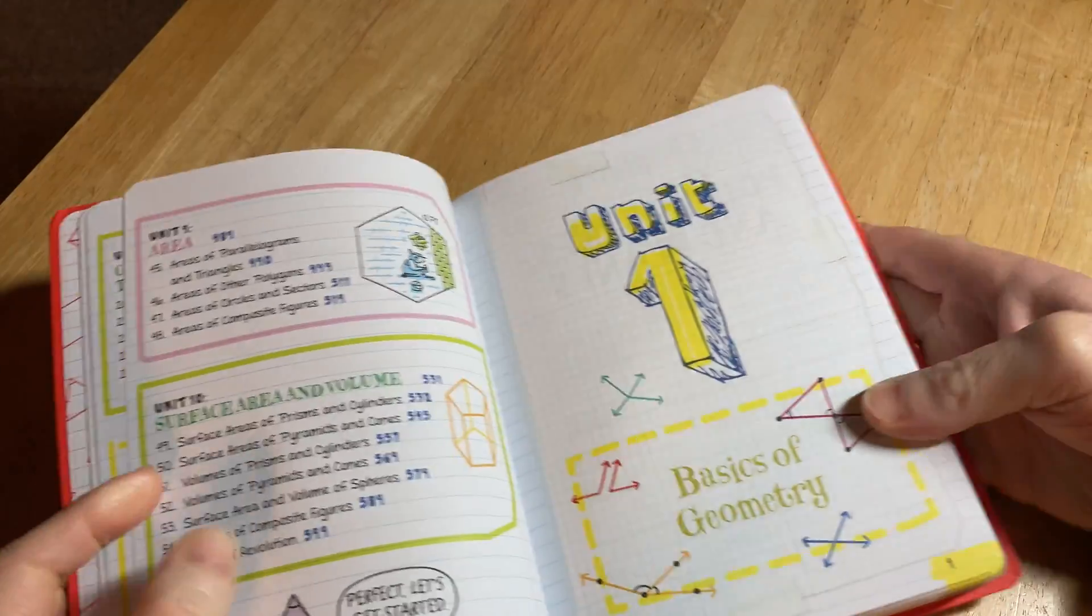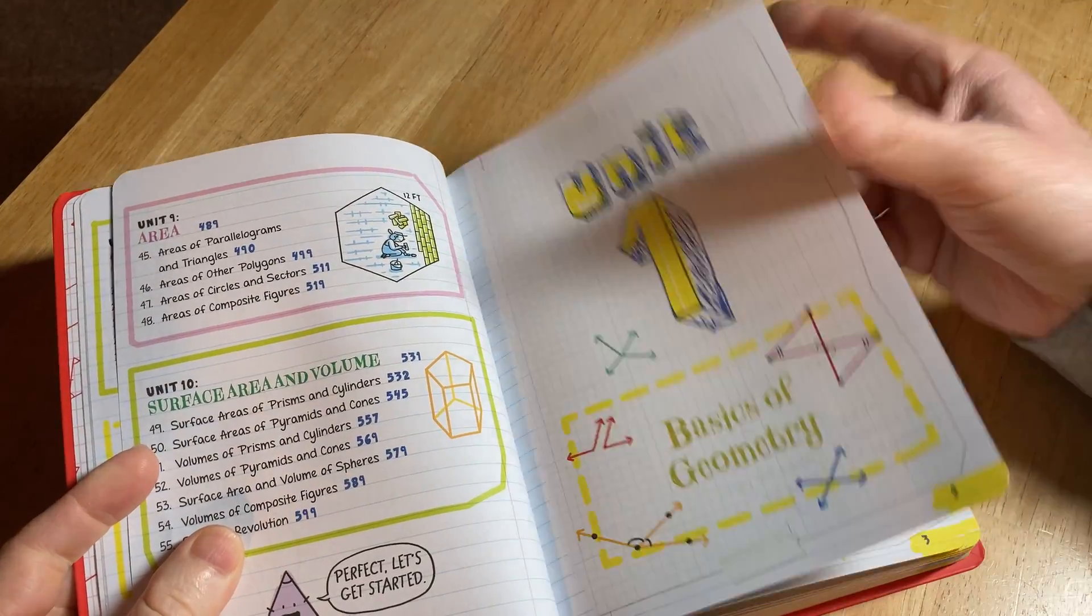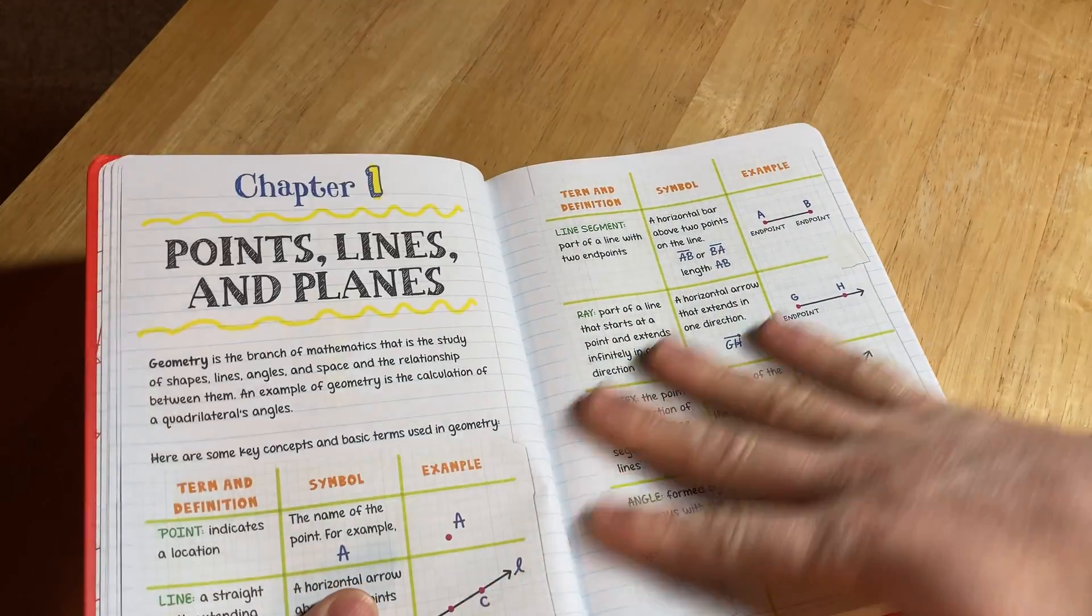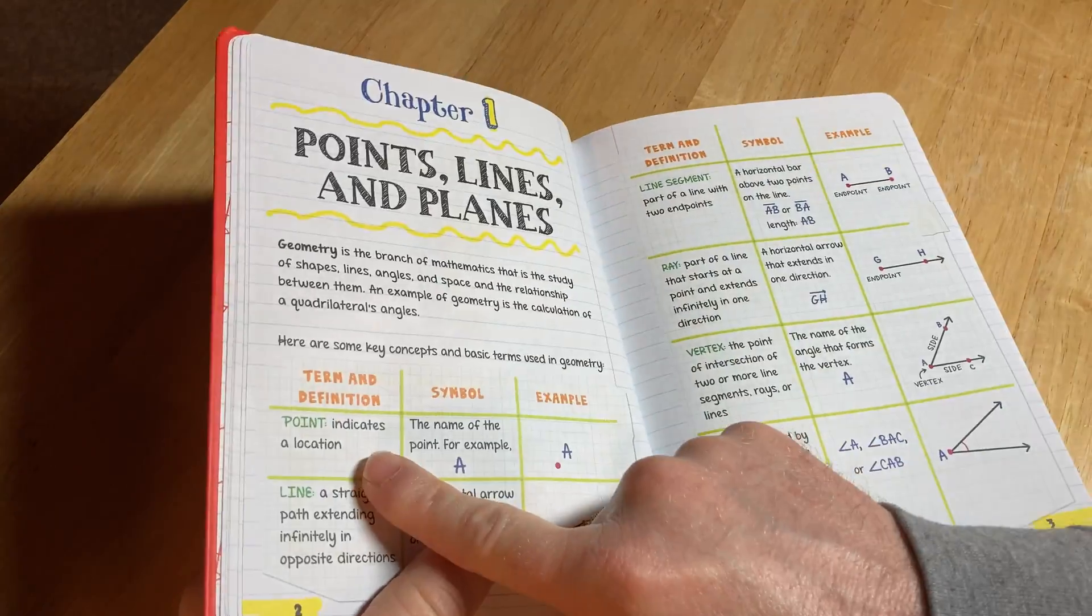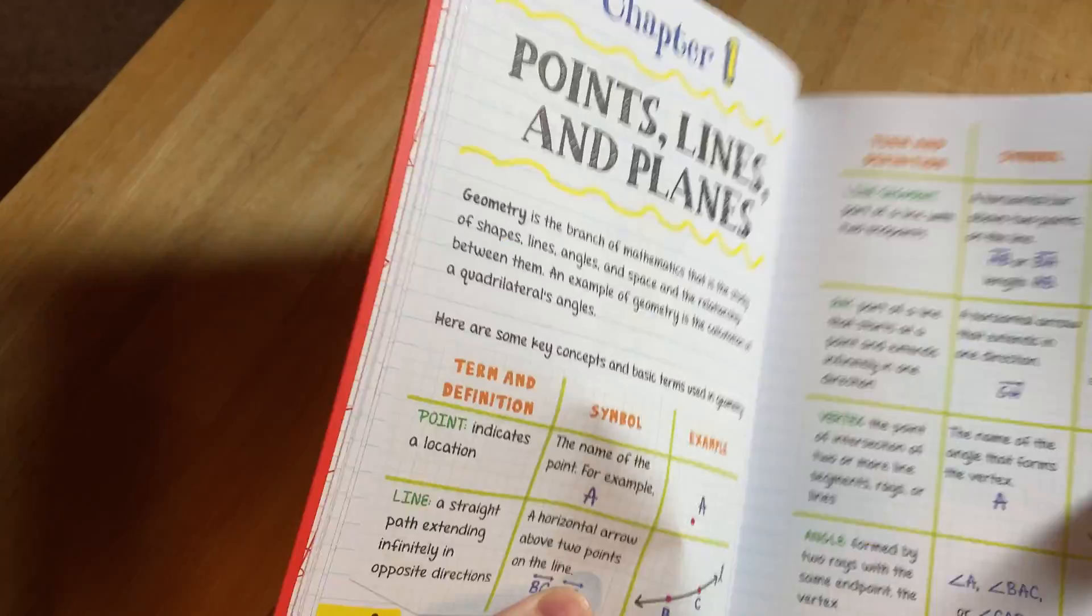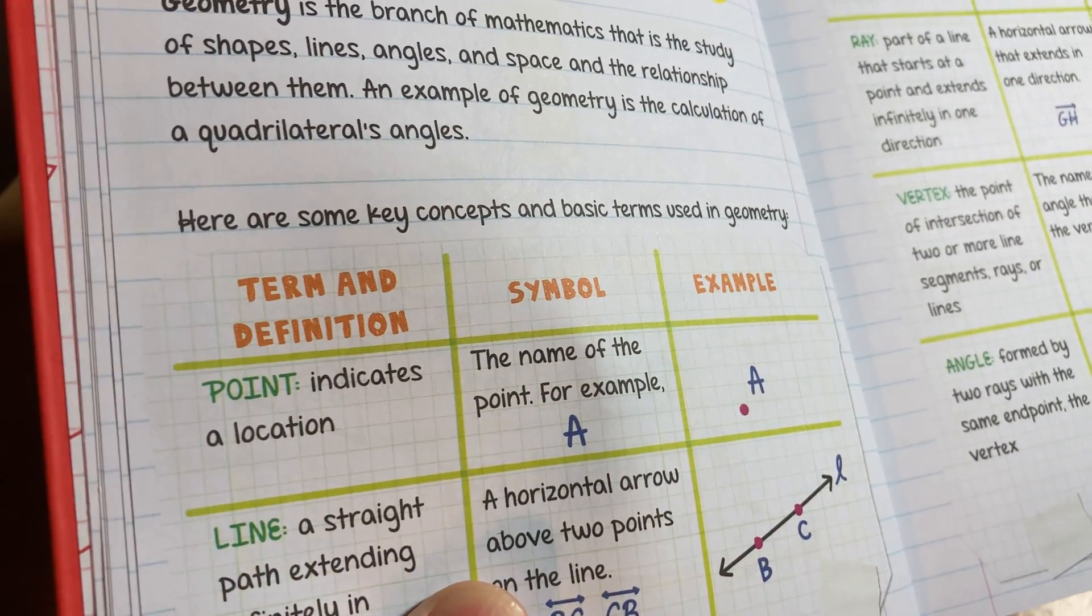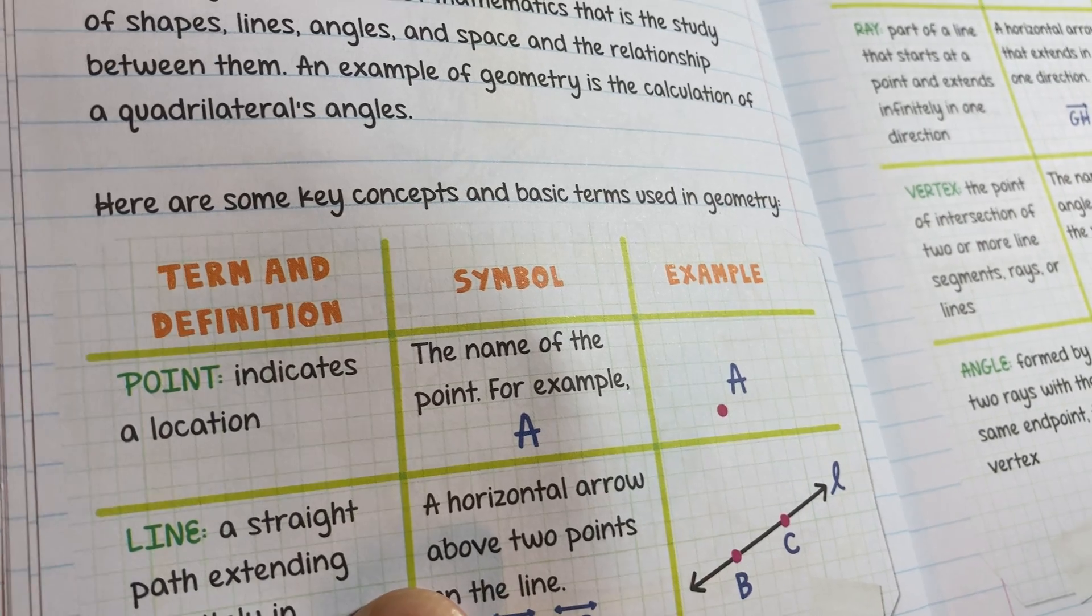Let's just look at it. It starts with basics of geometry—it's got a really nice layout. They're doing a really good job with this book: term and definition, symbol, example. So that's really nice. Like point indicates a location, the name of the point, for example A.